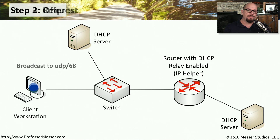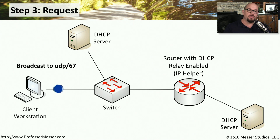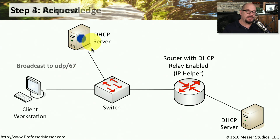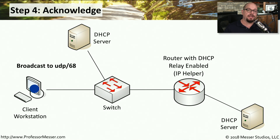When multiple offers are made to a device, the device usually chooses the first offer that was received. Now that it knows an IP address is available, our client workstation can send a broadcast over UDP port 67 to request that IP address. Once the DHCP server receives the request, it can send a formal acknowledgment to the client workstation over UDP port 68. At this point, the client workstation can configure itself with that IP address.